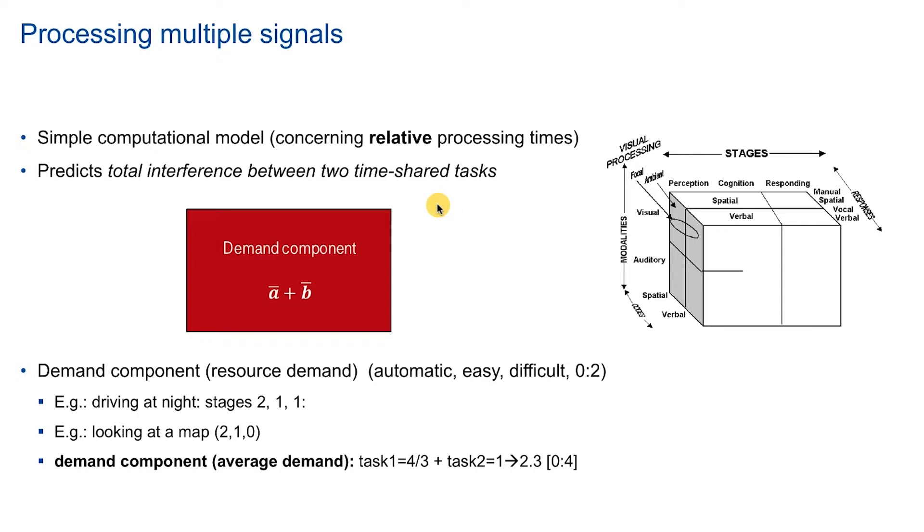Let's go through this model one by one. So the model predicts the total interference between two tasks which are shared in the time. First, we try to calculate a demand component. This is just the sum of the average cognitive demand that these two tasks would have.